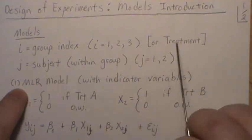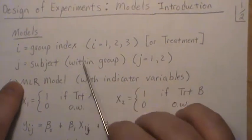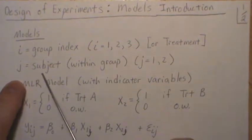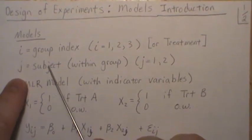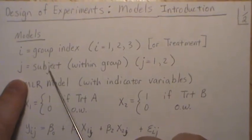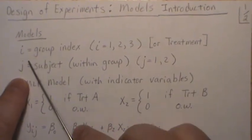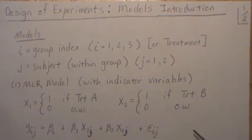Within each treatment or each group, and I'll probably call it group more than treatment, there's a subject, or more accurately probably should say observation. So there's observations within each group. And the ij index is what we're going to use.